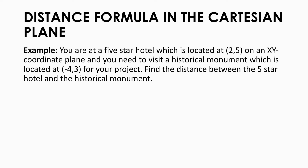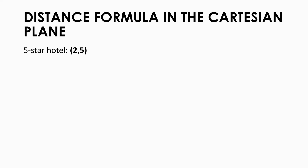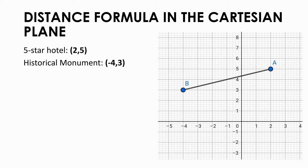You are at a 5-star hotel located at (2, 5) on an x-y coordinate plane, and you need to visit a historical monument located at (negative 4, 3) for your project. Find the distance between the 5-star hotel and the historical monument. The 5-star hotel has coordinates (2, 5), so first you have to plot the points. Second, the historical monument has coordinates (negative 4, 3), and you plot them as well. Next, identify which is x sub 1, y sub 1, and x sub 2, y sub 2.